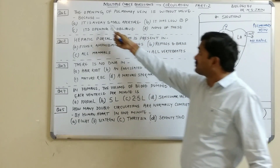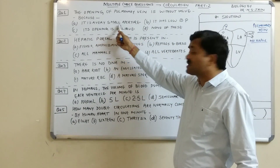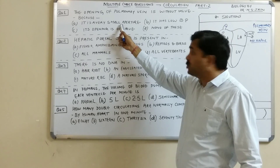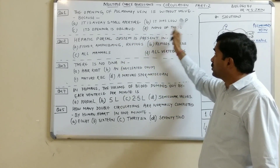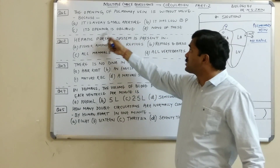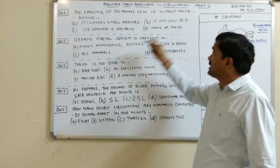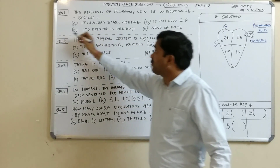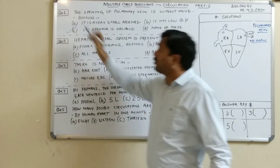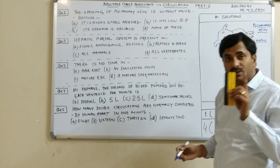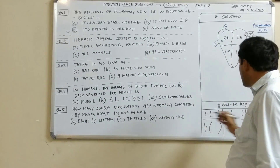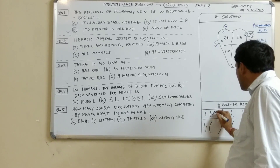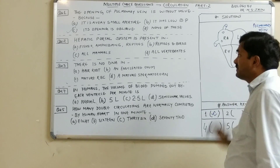So the question — the opening of the pulmonary vein is without valve because: (A) it is a very small aperture, (B) it has low BP, (C) its opening is oblique, or (D) none of these. The answer is C — its opening is oblique. Question number one answer is C.